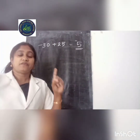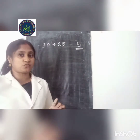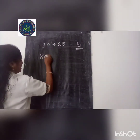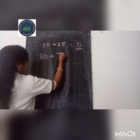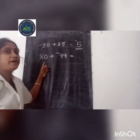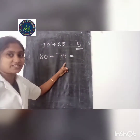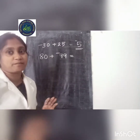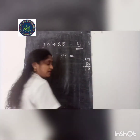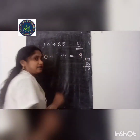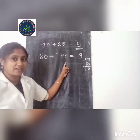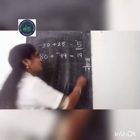The rule is: subtract the smallest number from the highest one and give the sign of the greatest number. One more problem: 80 plus minus 99. This number is positive and that one is negative. We subtract: 99 minus 80 equals 19. The greatest number is 99 and its sign is negative, so we give the negative sign, giving negative 19.